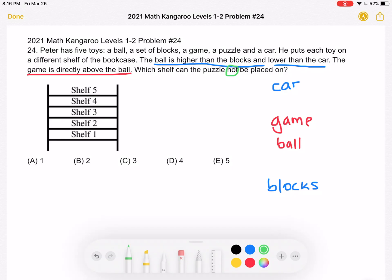One. And the green line I draw is going to represent where the puzzle goes. So if it goes right here, that means it's on shelf one. That's completely fine. It's not disturbing any of the order that the problem told us about. So one is okay. So our answer is not A.